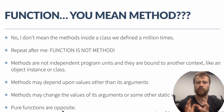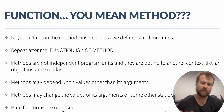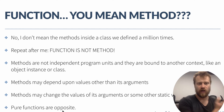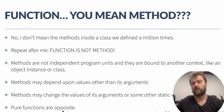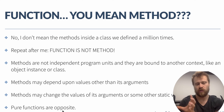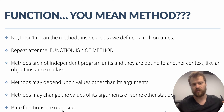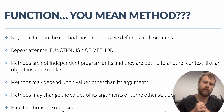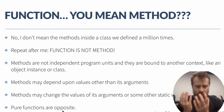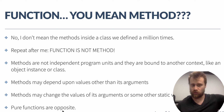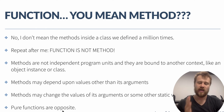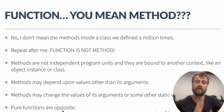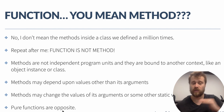Methods may depend upon values other than their arguments — a method may use an object instance's attributes. But functions do not depend on external variables or external values other than their arguments. If you need to pass some values to functions, you may pass them only as arguments. Also, methods may change the values of their arguments and even external values, but pure functions cannot change either their arguments or external values.